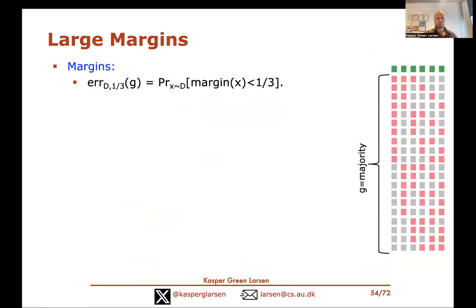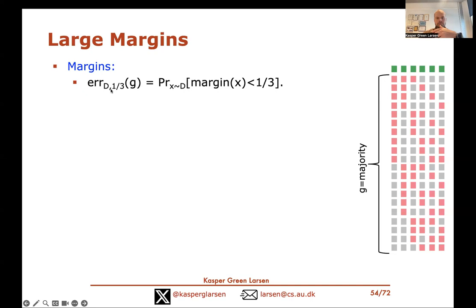Looking at a majority vote of three linear classifiers: in different regions there are three blue predictions, two blue and one red, three red, and so on. A blue point in the all-blue region has margin 1. A blue point in the two-blue region has margin 1/3. A blue point in the one-blue region has margin −1/3. We now introduce the margin error: the probability under distribution D that the margin is less than 1/3 — meaning fewer than two thirds of all hypotheses are correct.